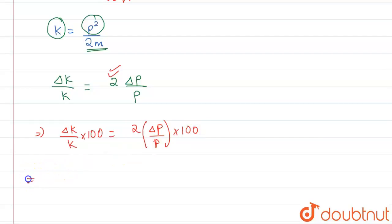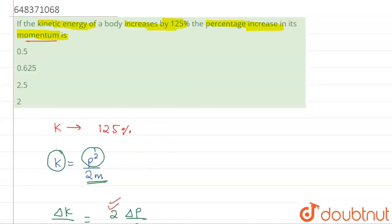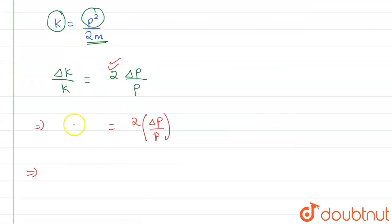We don't want to write this 100, that's also possible, but we have to change this 125 in terms of the fractional change. That is, 125 percent is equal to 1.25 of the value. That means the fractional change will be 1.25, the fraction delta k by k.